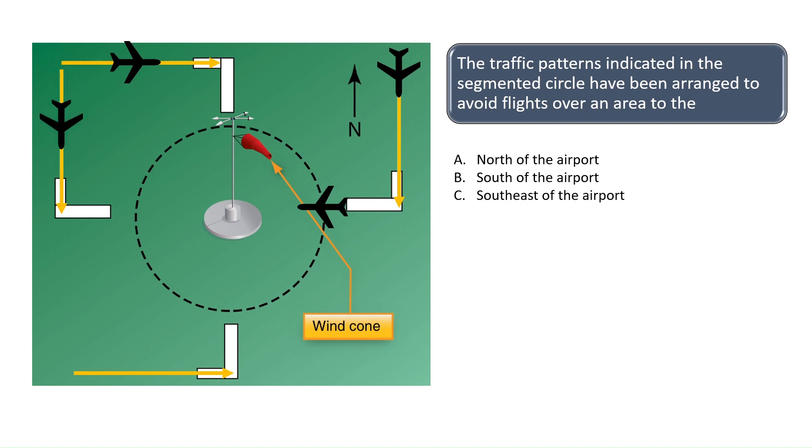The traffic pattern for runways 3-6 and runway 9 are to the left. As you can see, the only area where there is not a flow of traffic is the southeast of the airport. The correct answer is C.